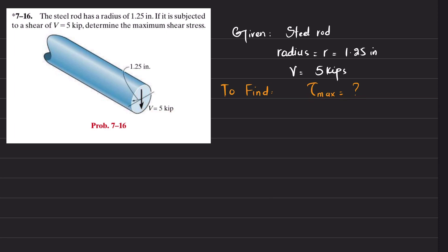Let's start with the solution. As we know, the maximum shear stress is equal to V times Q divided by I times t. Here we have V, but we do not have Q and we do not have I.